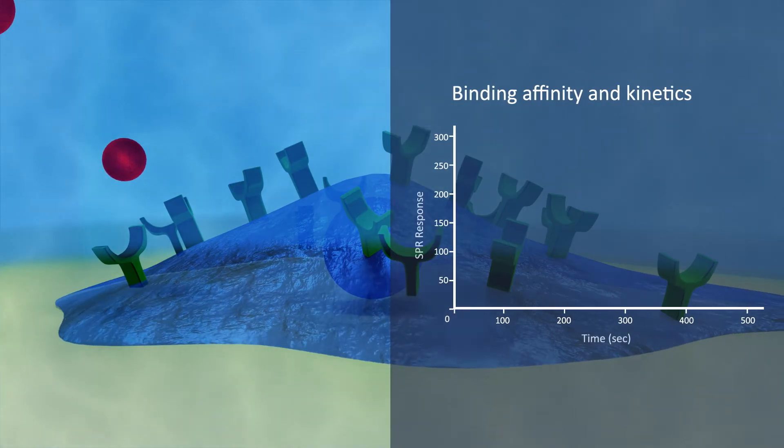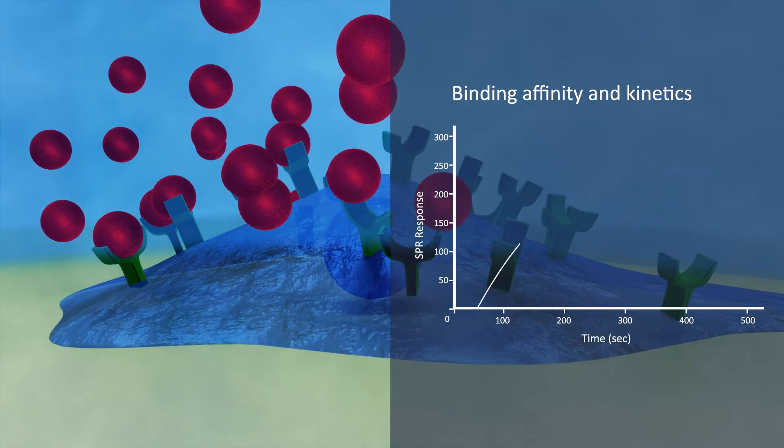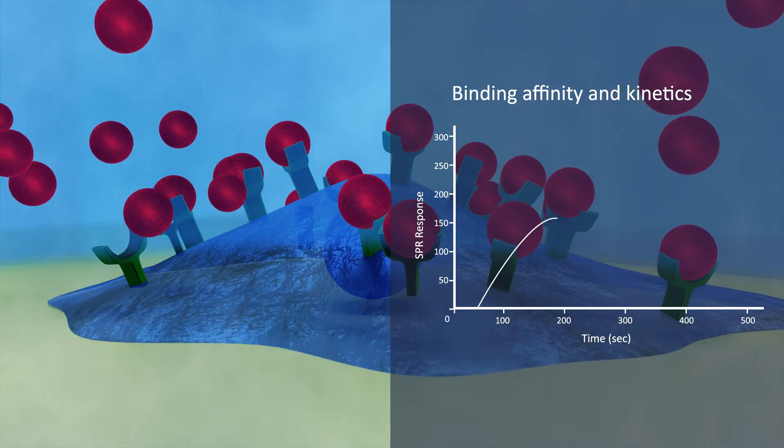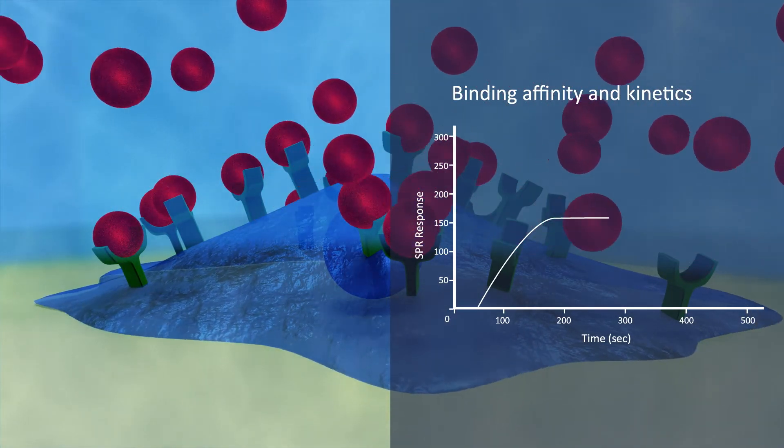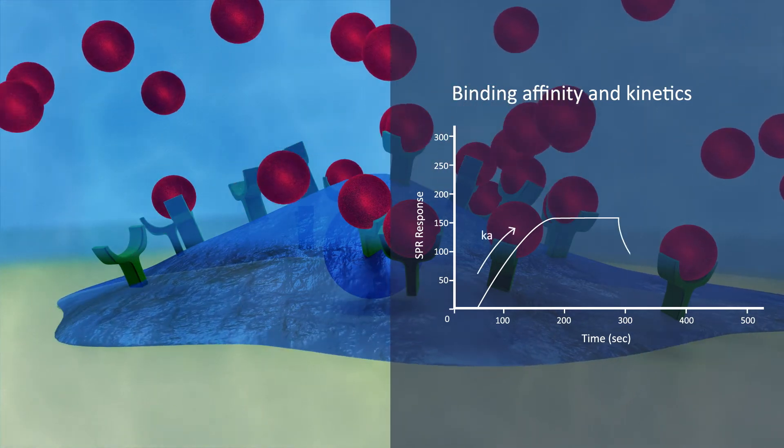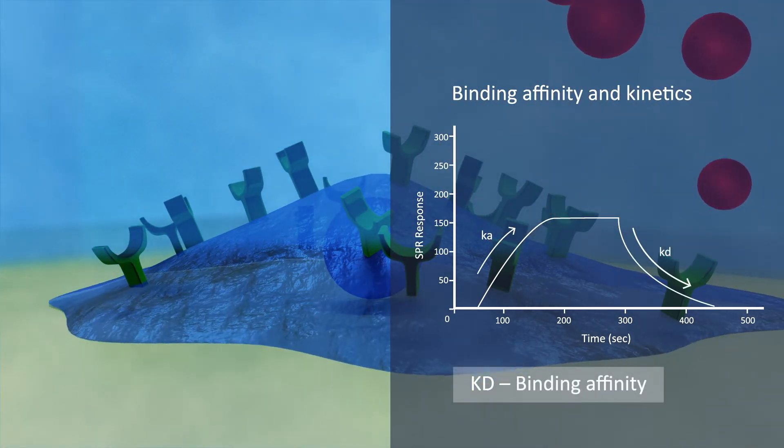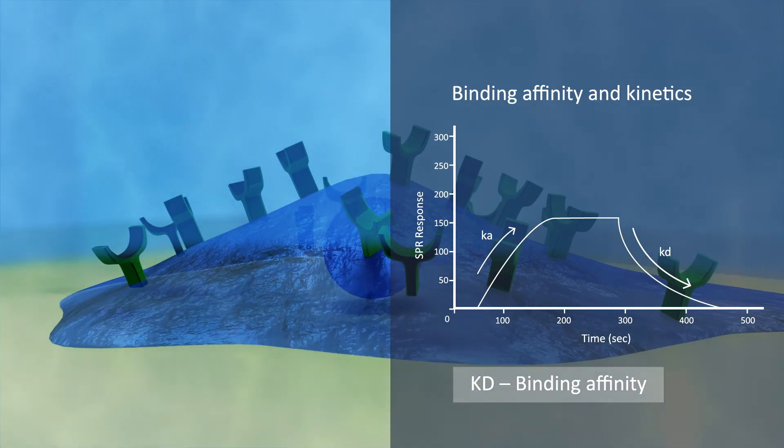Binding affinity and kinetics can be measured through a sensorgram, which plots the SPR response versus time. This sensorgram provides the association constant, Ka, and the dissociation constant, Kd. The binding affinity can also be derived.